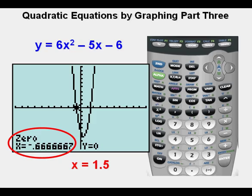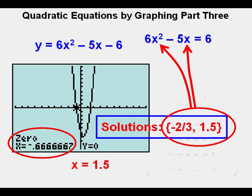The other solution is -0.666667 which is really -2/3. Joe's answer is here in set notation {-2/3, 1.5}, meaning that we can check our solutions by plugging back into the original quadratic equation.